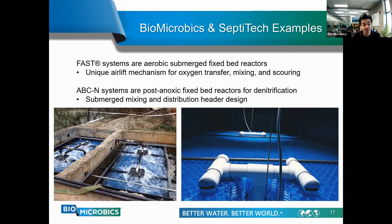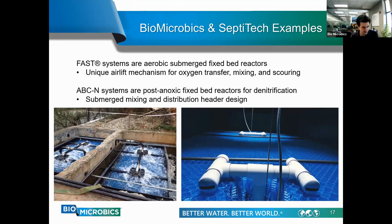The ABCN is a post-anoxic process: after a nitrification stage, a denitrification stage is needed. The ABCN uses media in the absence of oxygen along with a soluble carbon source to promote denitrification in an attached growth process. This is achieved using a submerged mixing header and pumps to recirculate nitrified effluent around the media to perform denitrification.